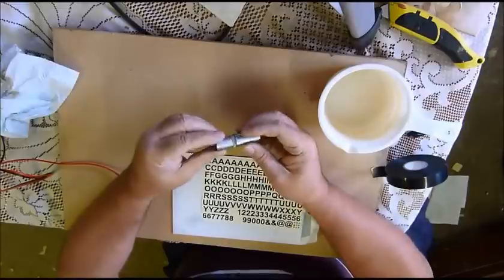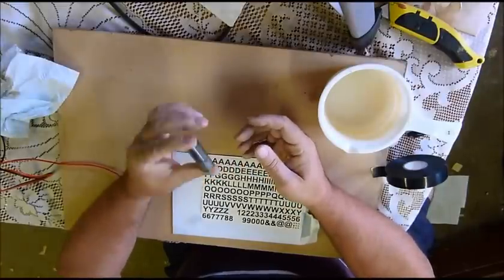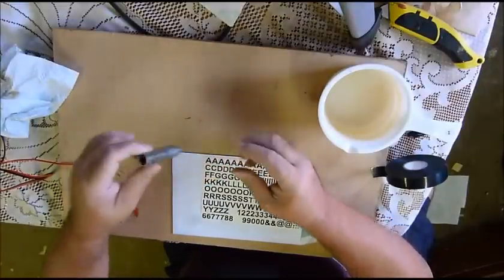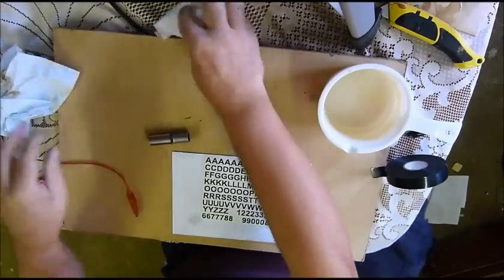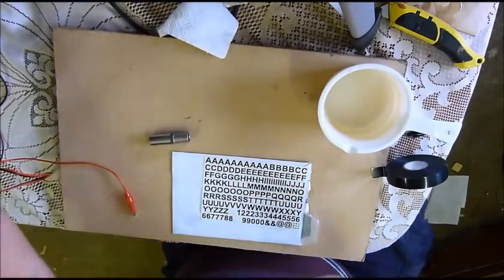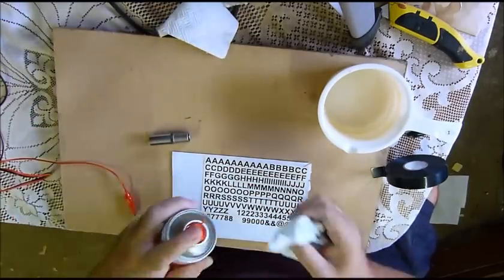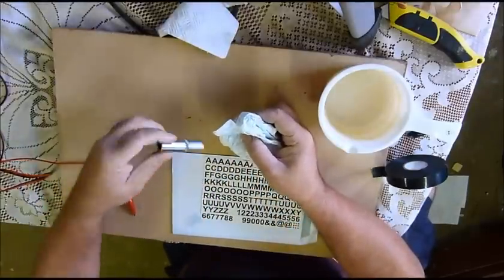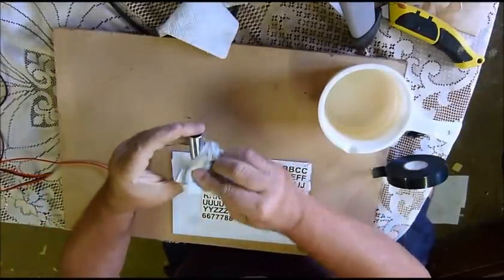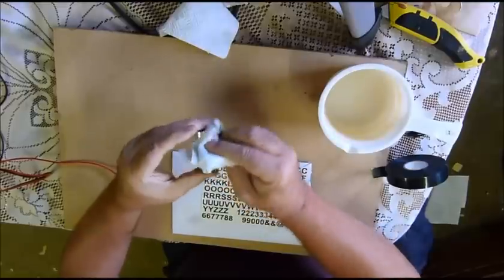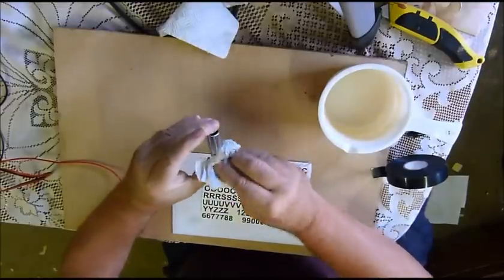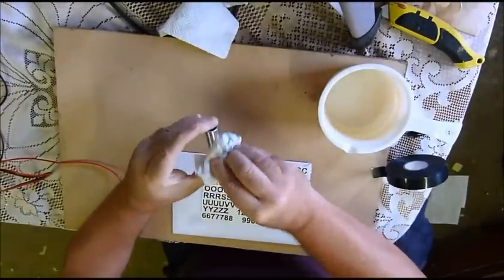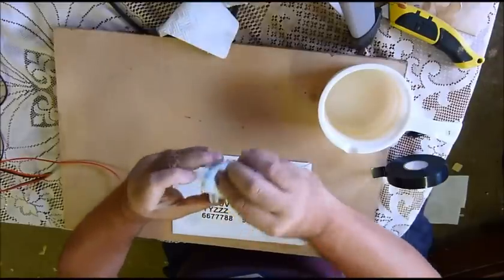Now what I'm going to do is put some bigger, more obvious numbers on this socket set just to make life a little easier. So job number one, we need to degrease. I've got some brake cleaner here which I can use to just remove any bits of grease and nastiness from there.